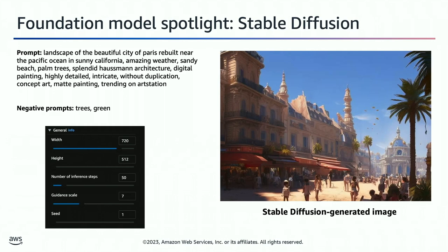A couple of model spotlights: first, Stable Diffusion. We're sending in a prompt: 'landscape of the beautiful city of Paris rebuilt near the Pacific Ocean in sunny California, with great weather, sandy beach, palm trees, architecture,' and we get this amazing output. I did this myself — I went into the SageMaker console, found good prompts online, copied the prompt, pasted it into my SageMaker Foundation Model Hub, generated this amazing image, downloaded it, and we're ready to go.